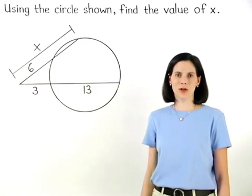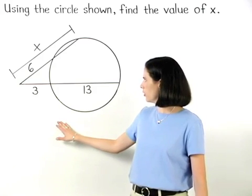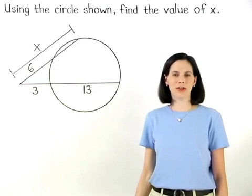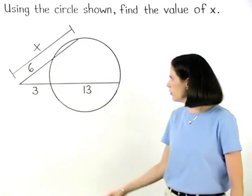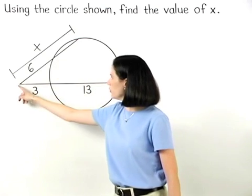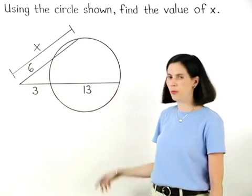In this example, we're asked to use the circle shown to find the value of x. Notice that we have two secant segments drawn to a circle from an external point.